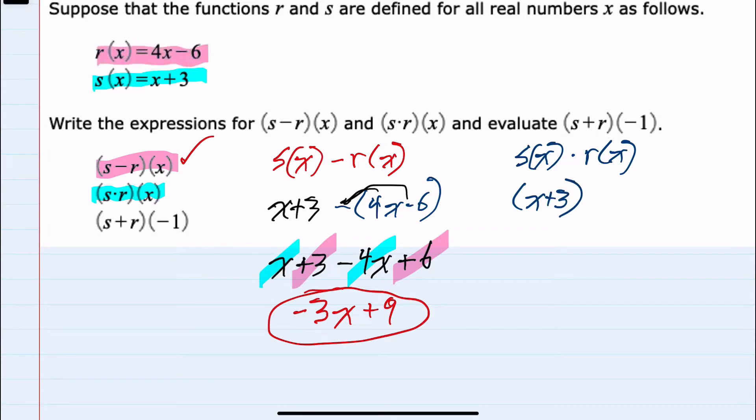multiply by r of x, which is 4x minus 6. And again I use parentheses to show that all of these terms are being multiplied. From here I can FOIL